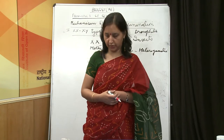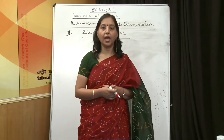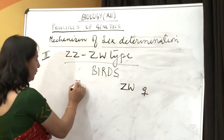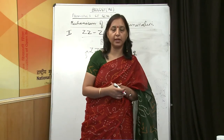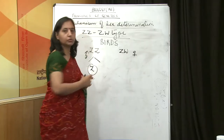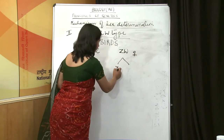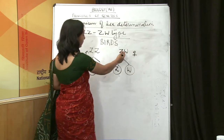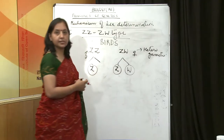In birds, the mechanism of sex determination is quite different. Here females are heterogametic, whereas males are homogametic — unlike human beings where females are homogametic and males are heterogametic. Males produce only one type of gamete containing Z chromosome, whereas females produce two types of eggs: either having Z type or W type of chromosome. So here females are heterogametic and males are homogametic.